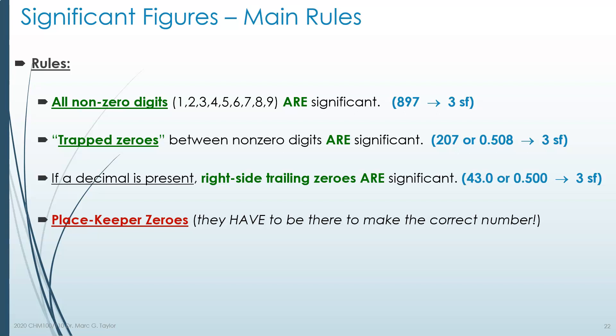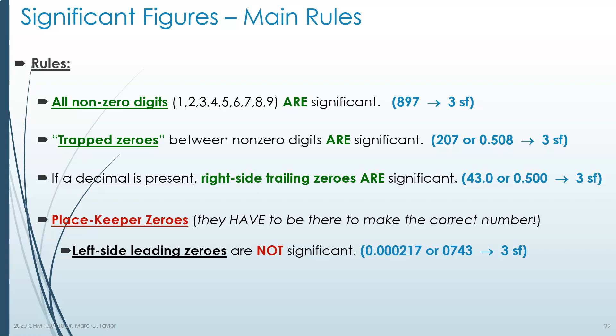Placekeeper zeros are zeros that absolutely have to be there to make the number correct, and they are not necessarily significant digits. For example, in 0.000217, those three zeros on the right of the decimal place are placekeepers — they're telling you where to start writing the 217. They have to be there; you have no choice, and they don't add to the quality of your measurement. They're there merely to tell you which decimal place to start writing your non-zero significant digits.